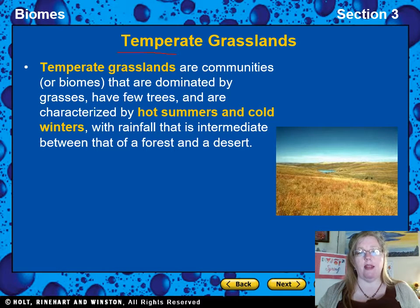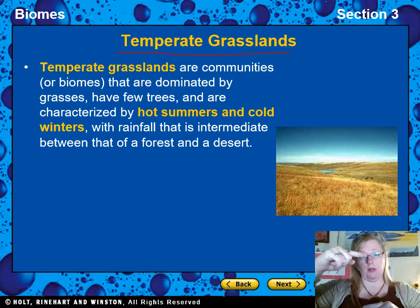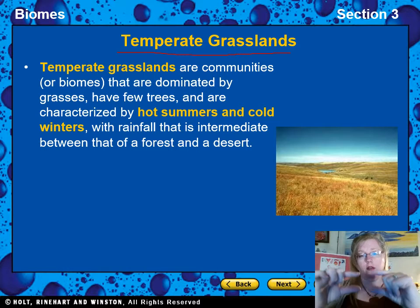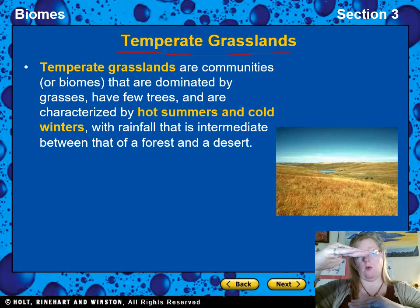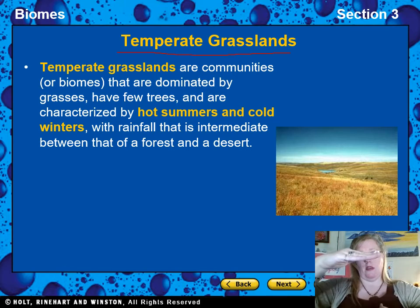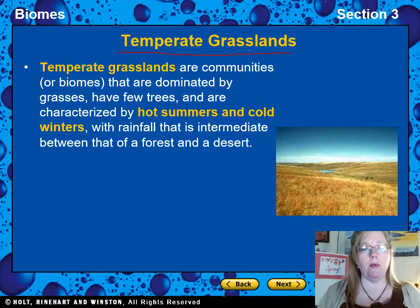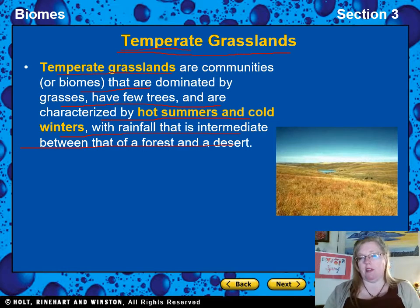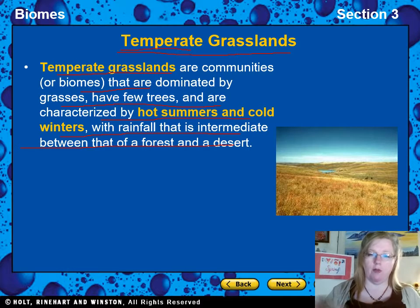Now we move to temperate grasslands. Savannahs are near the equator; 'temperate' means in the middle. You have the equator at the center, then temperate zones going up and down, then the polar regions — tropical, temperate, polar. Temperate grasslands are communities dominated by grasses with very few trees, characterized by hot summers and very cold winters, with rainfall intermediate between a forest and a desert. That's a lot — let's break it down.